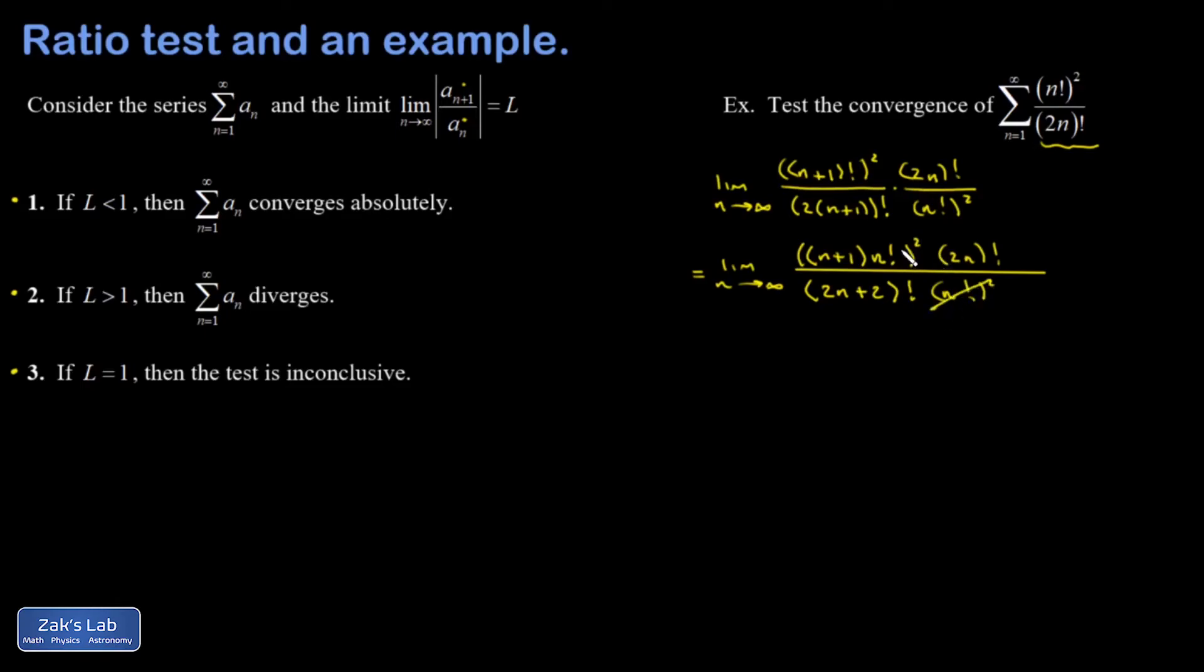The (n!)² cancels out. Now I realize that I can go after the 2n! in the numerator by just splitting off the first few terms of this factorial in the denominator. So I'm going to write it as (2n+2) times (2n+1). The next term is 2n and then all the way down to 1. That's 2n!. So that's gone.